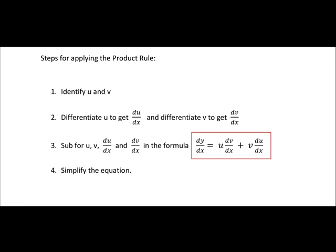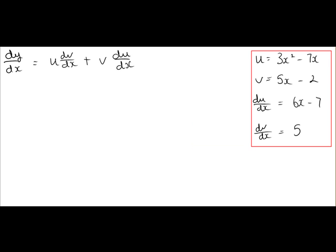Next we have to sub in our values into the formula. On the right is u, v, du dx and dv dx which we've just figured out. So we're going to sub them into our formula for the product rule.